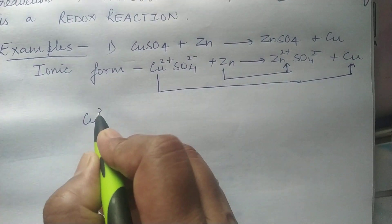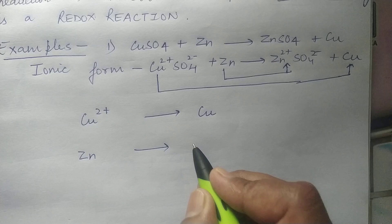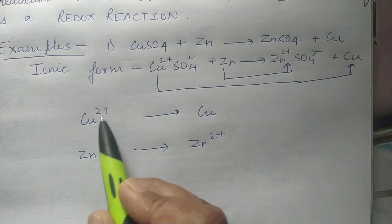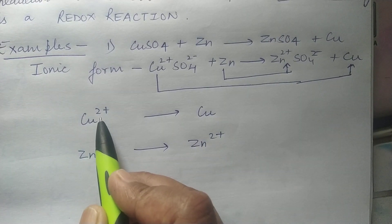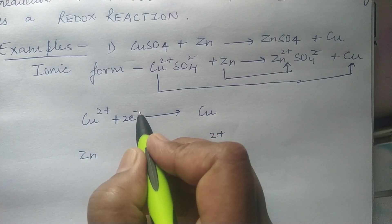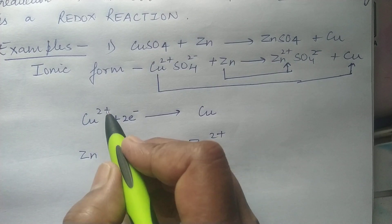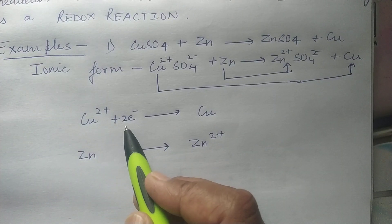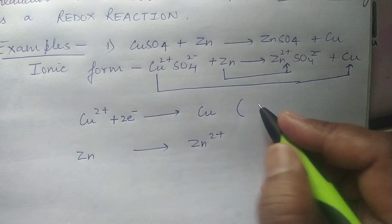If you see this ionic form of the reaction, you will come to know that Cu²⁺ is getting converted to Cu, and Zn is getting converted to Zn²⁺. Now, how can this happen? If you have Cu²⁺ and you add two electrons to it — electrons have negative charge — two electrons with two negative charges will balance the positive charge of copper, and Cu²⁺ will be converted to a neutral copper atom. Here we are adding two electrons to Cu²⁺, so this is addition of electrons, and addition of electrons is reduction.